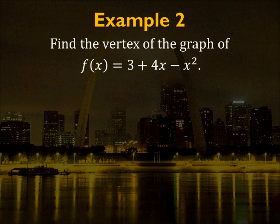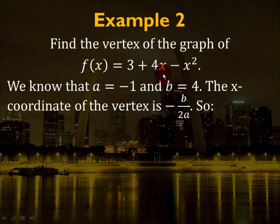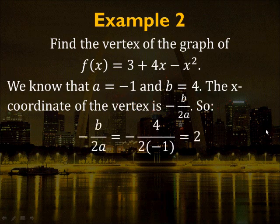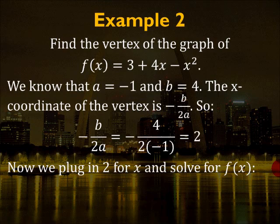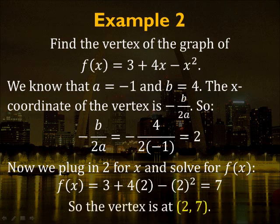Find the vertex of f(x) = 3 + 4x - x². Here a = -1 (the coefficient of x²) and b = 4 (the coefficient of x). The x-coordinate of the vertex is -b/(2a) = -4 / (2×-1) = -4 / -2 = 2. To find the y-coordinate, plug x = 2 into the function: f(2) = 3 + 4(2) - 2² = 7. So the vertex is at (2, 7).